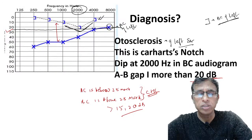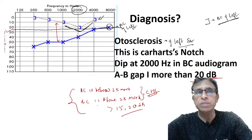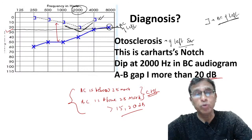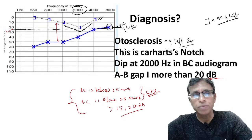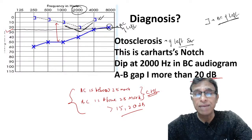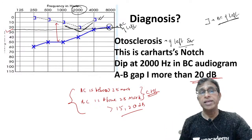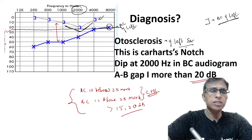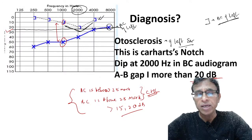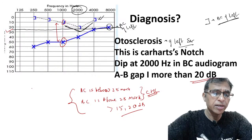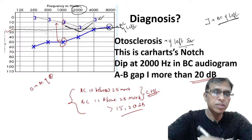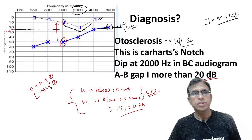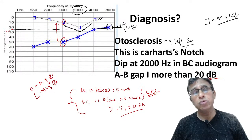In sensorineural hearing loss, both AC and BC are below 25 dB and the air-bone gap is less than 15 dB — the opposite pattern. In audiogram-based exam questions, you must know the symbols: blue color represents the left ear, red represents the right ear. For the right ear, a circle is AC and the opposite symbol is BC. Audiometry and tympanometry are very important — image-based questions are asked from both.